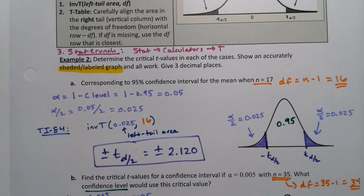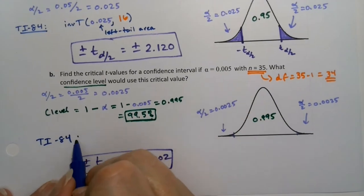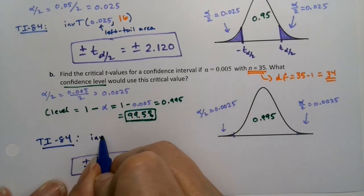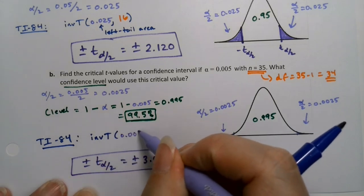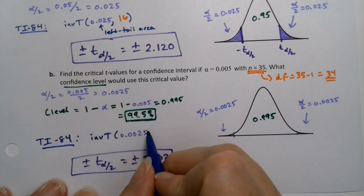So if you have the calculator, you can use the calculator. Me personally, I would use StatCrunch. I think StatCrunch is easier for these, but just my opinion. So this is 0.0025 and then 34.